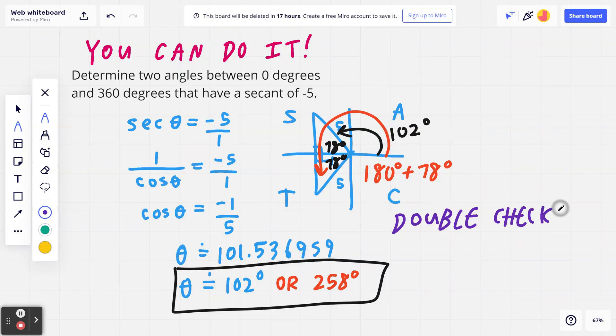Grab your calculator and plug 102 degrees and 258 degrees back into the calculator. Be mindful, when you're doing this, you can't really press secant in most scientific calculators. So what I'm really doing is taking 1 divided by cosine of 102 degrees, which is approximately negative 4.8.